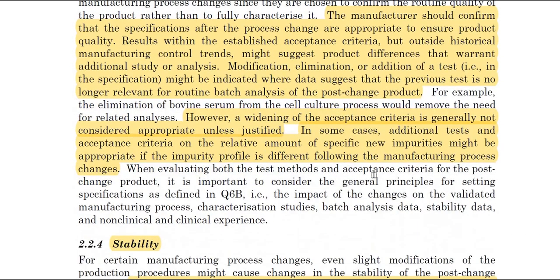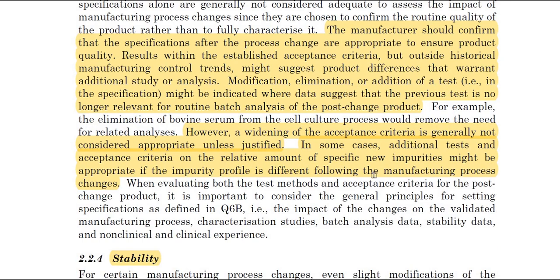Regarding specifications: the manufacturer should confirm that the specifications for the post-change process are appropriate to ensure product quality results within established acceptance criteria. Results outside the historical manufacturing control trend might suggest product differences that warrant additional study, or modifications, eliminations or additions to tests in the specifications. Widening of acceptance criteria is generally not considered appropriate unless otherwise justified. In cases where the impurity profile differs following the manufacturing process change, additional tests and appropriate acceptance criteria on the relative amount of specific new impurities might be appropriate.